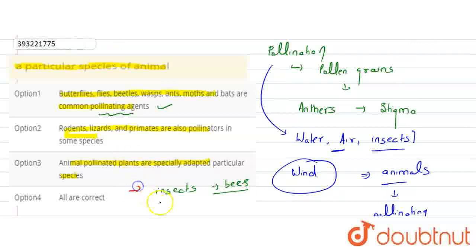Even larger animals, such as primates, rodents, reptiles, and lizards, are also pollinators in some species.